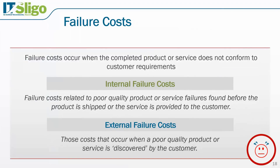If you don't spend money on prevention and appraisal, you end up with failure costs. Internal failure costs occur prior to delivery of the product or service — examples include scrap, rework, re-inspection, retesting, downgrading products sold at a discount, and material review board activity. External failure costs occur after delivery to the customer — examples include managing customer complaints, returns, warranty claims, and product recalls.